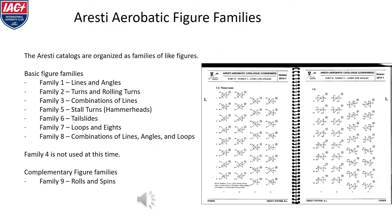The Aresti catalogs are organized as families of like figures. Basic figure families are families 1 through 8: lines and angles, turns and rolling turns, combinations of lines, stall turns, tail slides, loops and eights, and combinations of lines, angles and loops. Family 4 currently is not used. Family 9 are complementary figures — today they are rolls and spins.